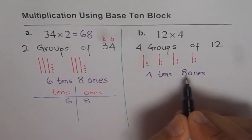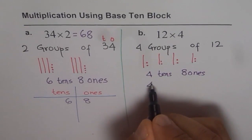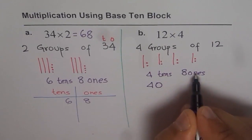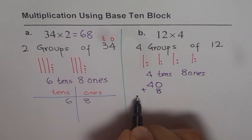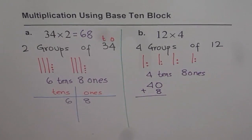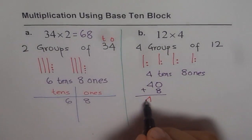4 tens and 8 ones. 4 tens means the number 40, correct? 8 ones means the number 8. So when you add them, what do you get? You get 48, right? 48.